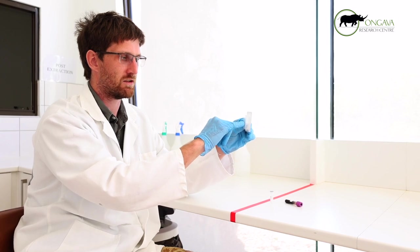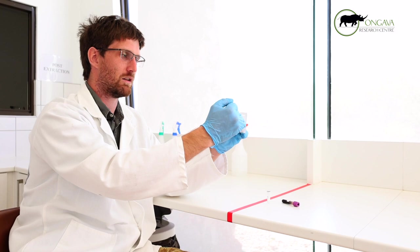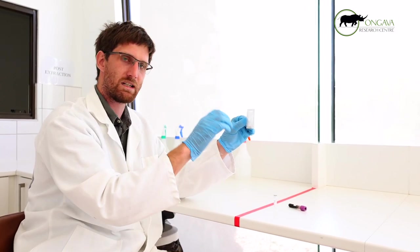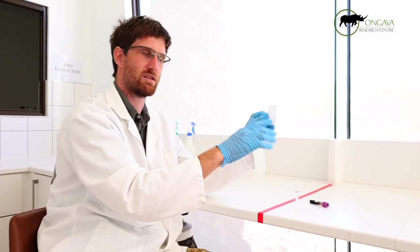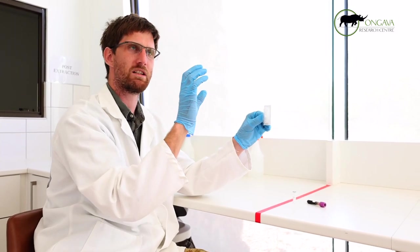If you look closely, there's a filter on the inside. We put our extracted product onto this filter, and then we centrifuge it. The centrifuge just spins very fast at high RPM, much like a fan.